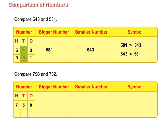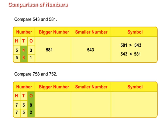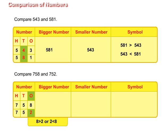Now let us compare 758 and 752. Both are three-digit numbers and they have the same digits in their hundreds and tens place. So, we will compare the digits in their ones place. In 758, 8 is in the ones place, and 752 has 2 in its ones place. We know that 8 is greater than 2, or 2 is less than 8. So, 758 is greater than 752, or 752 is less than 758.